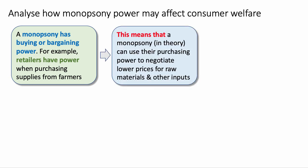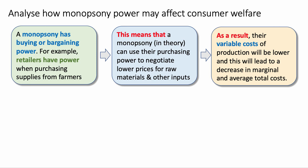This means that — using a connective phrase — a monopsony in theory can use their purchasing power, their bargaining power, to negotiate a better price for the raw materials and other inputs that they need to buy. As a result, as a consequence, their variable costs of production will be lower, and this will lead to a decrease in the marginal and average total cost.